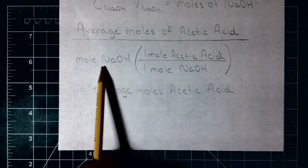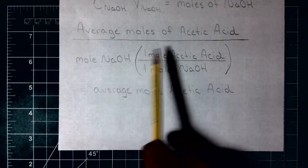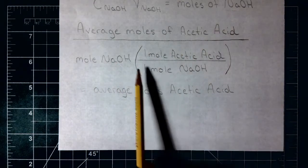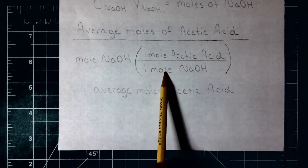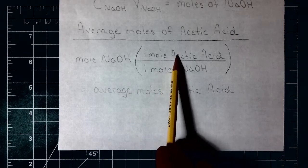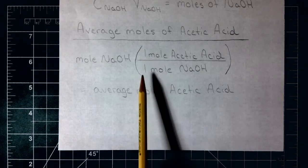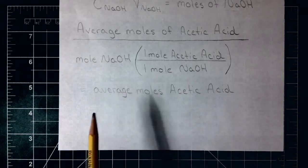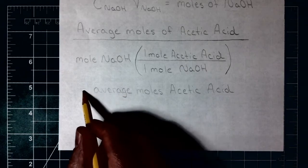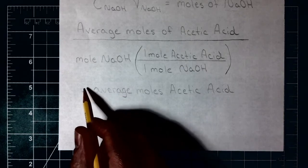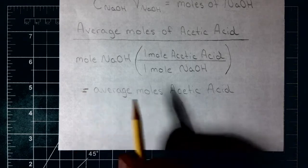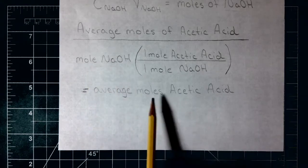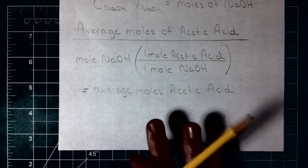Next they're asking for the average moles of acetic acid. We take the moles of sodium hydroxide and handle the stoichiometry — how many moles of NaOH does it take for every mole of acetic acid. It's just a one-to-one ratio, so this is pretty easy: the moles of sodium hydroxide equal the moles of acetic acid in this case.